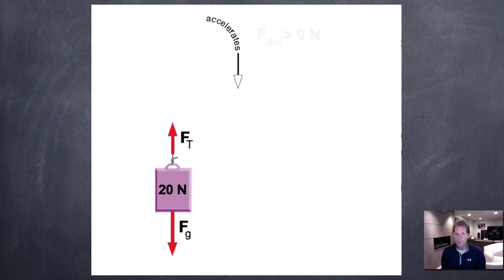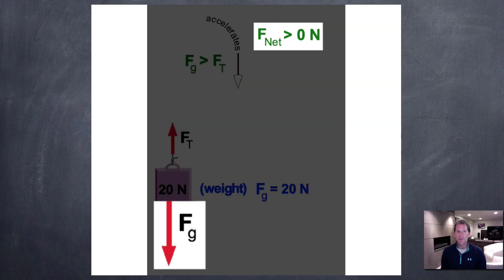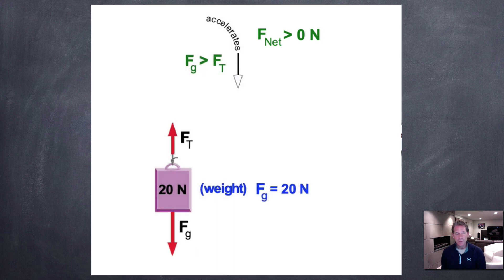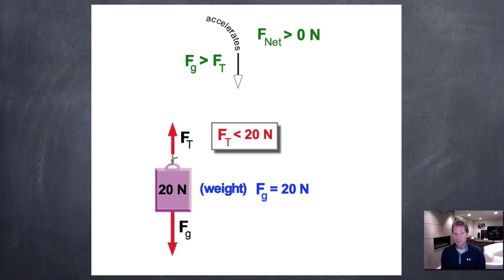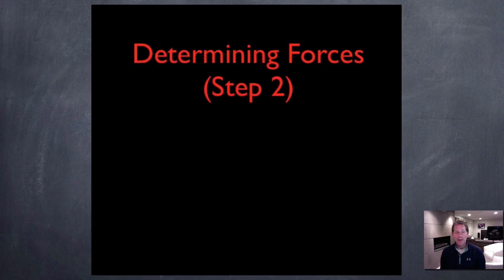For the 20-newton mass: we have the force of gravity down and the force of tension up. The force of gravity is 20 newtons. We know the net force has to be greater than zero, so the force of gravity must be bigger than the force of tension. Therefore, the force of tension is going to be less than 20 newtons. At this stage we don't know the exact value, but we know it'll be less than 20.